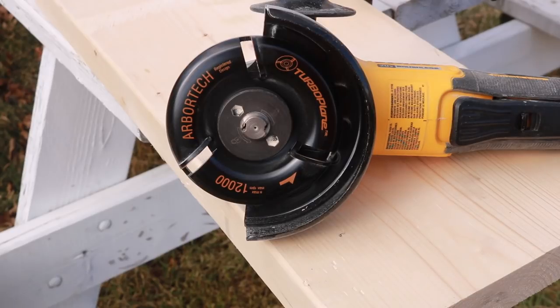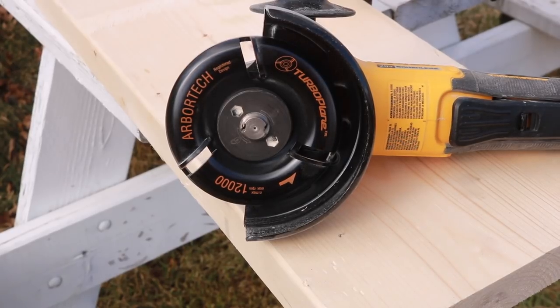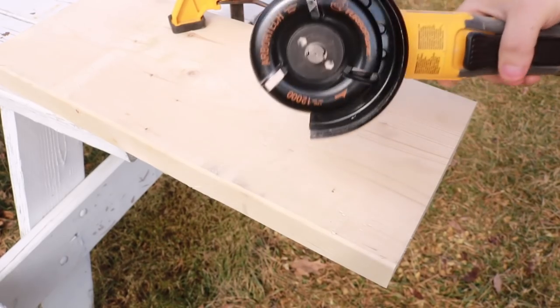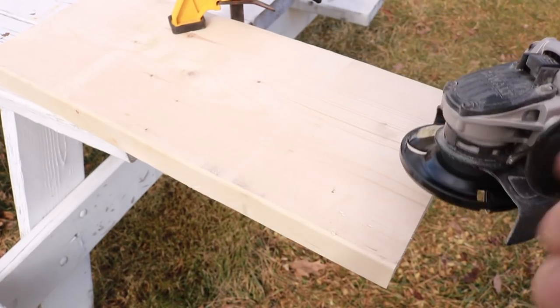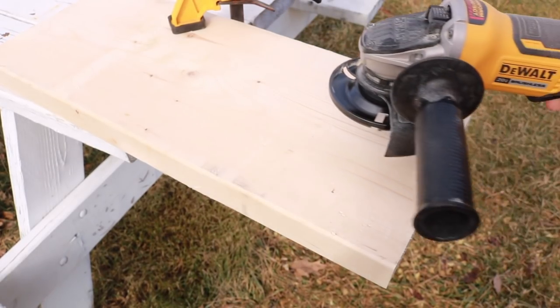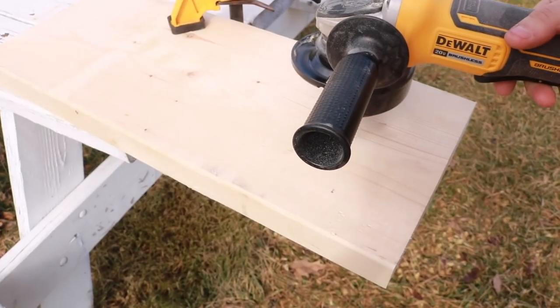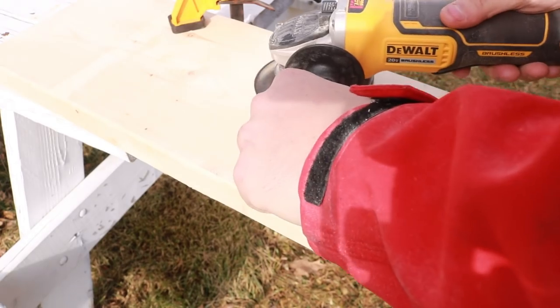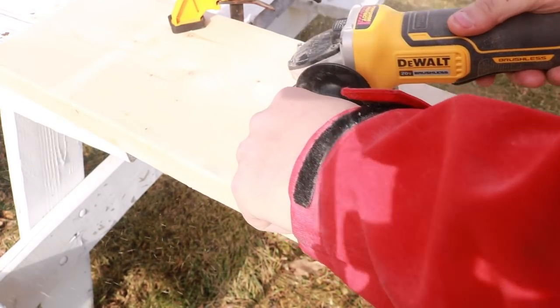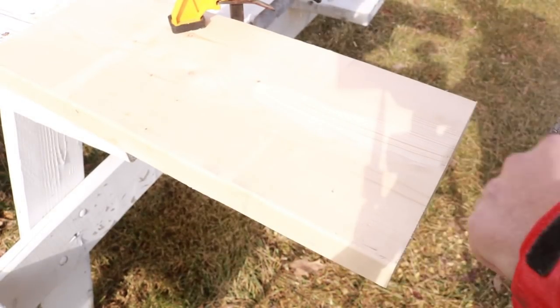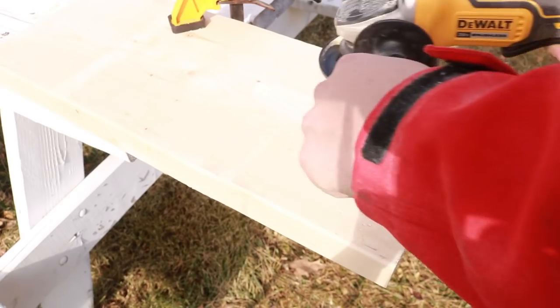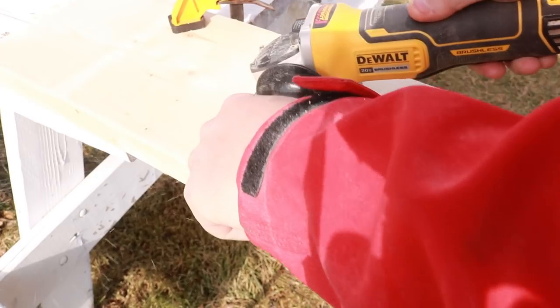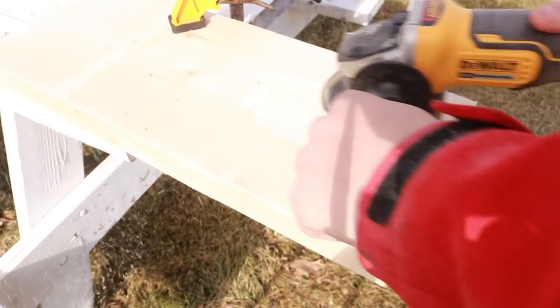Alright, so what I'm gonna do, I'm gonna take this outside. It does make quite a mess, but there's no dust, it's chips, that's why I like it. We're just gonna take this piece of pine. You can use this on any type of wood really. I'm gonna show you how this will carve out. Again, if you're making a bench or a seat, you know, it's just really cool. Check it out, I'll get in at another angle for you so you can see that a little bit better.